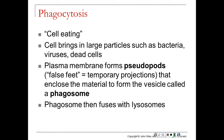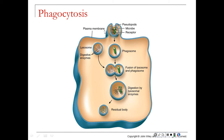Phagocytosis is bringing in large particles such as bacteria or viruses — this is also called cell eating. The plasma membrane literally forms false feet called pseudopods that enclose and envelop what's called a phagosome. Here you can see those pseudopods swelling out from the plasma membrane, engulfing some type of pathogen — in this case a microbe — coming into a vesicle, and then fusing with a lysosome so the lysosome can digest the particle.